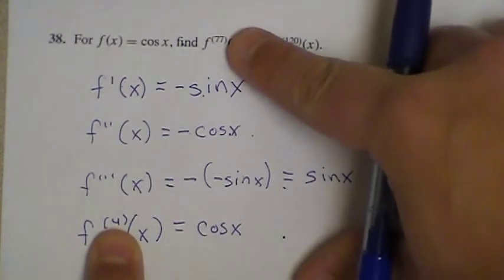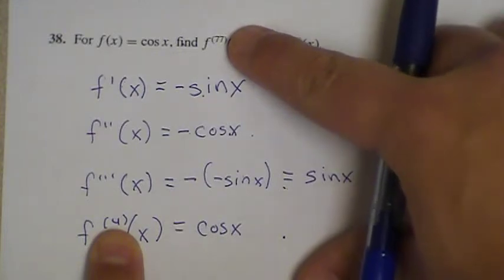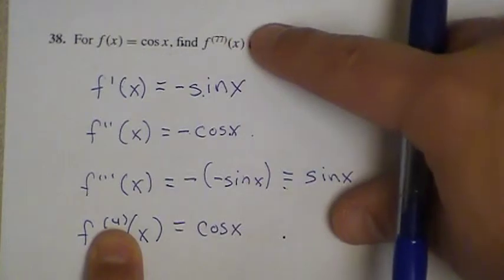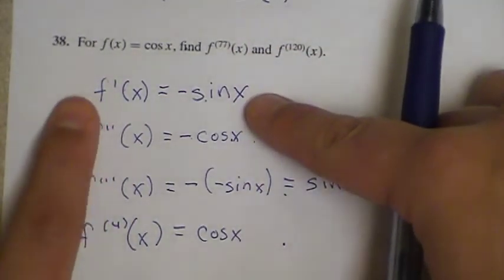77 is not divisible by 4. But if you think about a number near 77 that is divisible by 4, it would be 76. So the 76th derivative will be cosine. The 77th derivative will be back to negative sine.